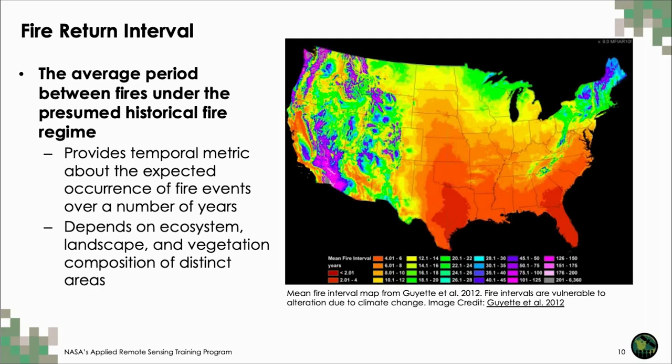An important component of fire assessment over time is the fire return interval, usually defined as the average period between fires under the presumed historical fire regime. Fire interval provides a useful temporal metric describing the normal or expected occurrence of fires over a number of years, and intervals vary from site to site. We have an example of a fire interval map from 2012 for the United States, with estimates ranging from less than two years to hundreds of years.